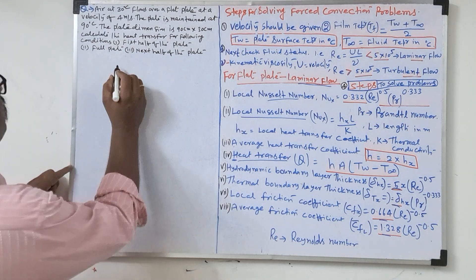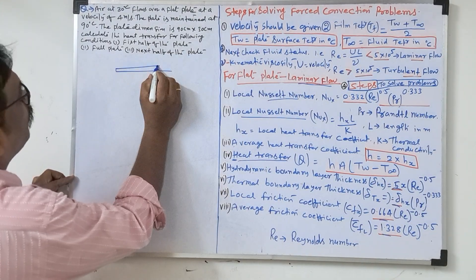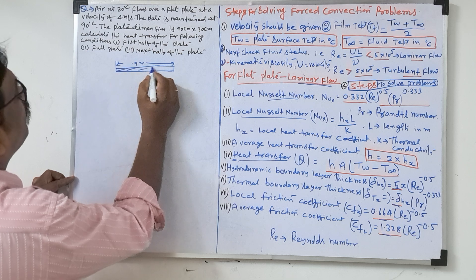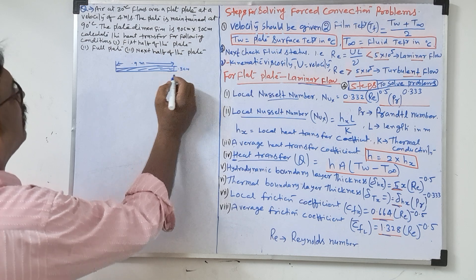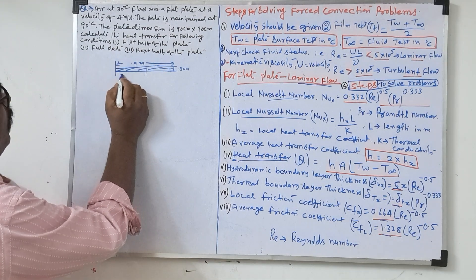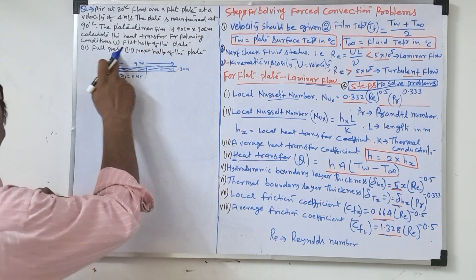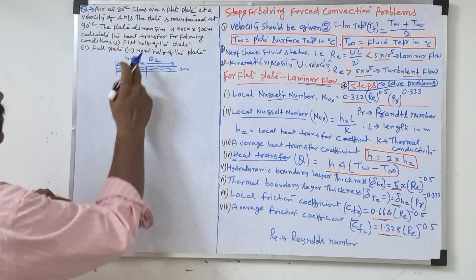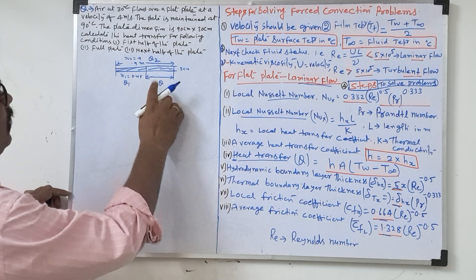What are they asking? The plate is 0.9 meter length and width is 0.3 meter. Calculate the heat transfer for the following conditions: first half of the plate, where x1 is equal to 0.45 — we will find Q1. Next, full plate, where x2 will be 0.9 — we will find Q2. Then the next half of the plate — we will find Q3. This only we have to find out.